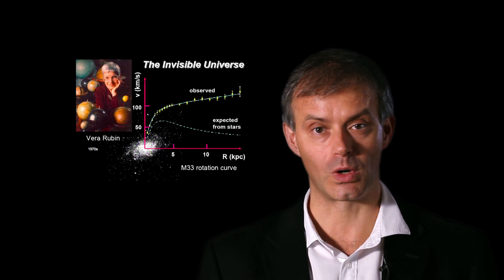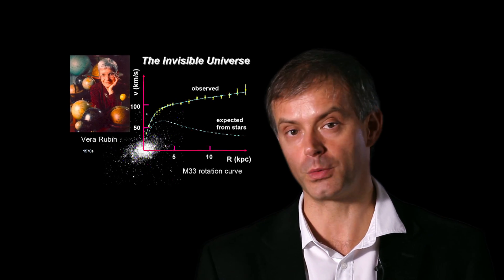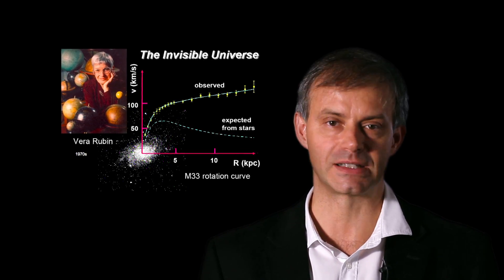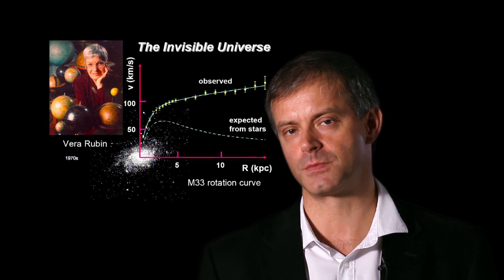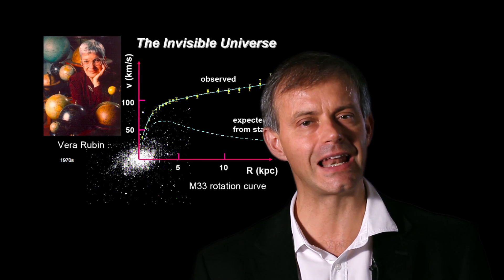During the 1970s, the American astronomer Vera Rubin and her team examined again the dark matter. They were studying the spiral galaxies and the rotation speed of the stars around the galactic centre.